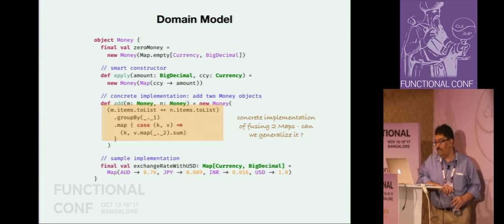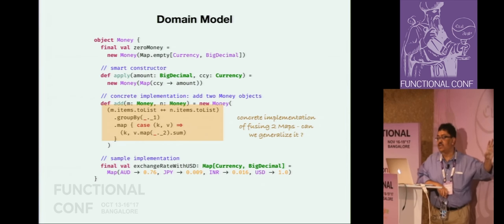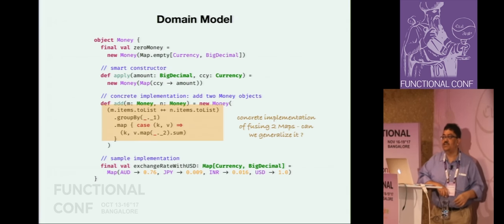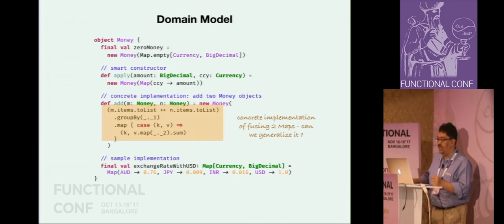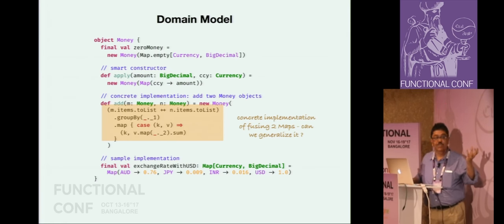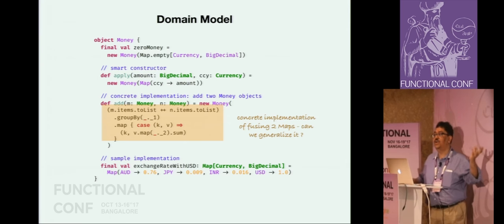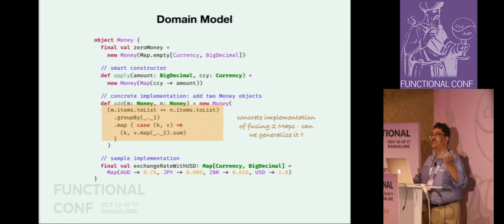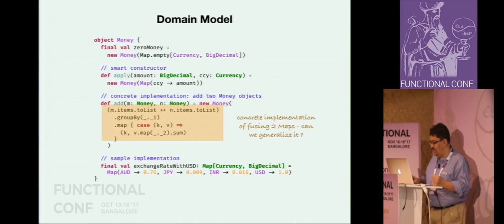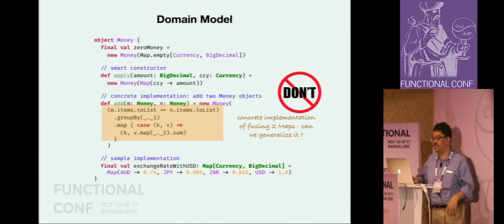We will look at this add function. What exactly are we doing here? If we focus on the how part - how we are adding the money instances - we are basically manipulating two maps. We are fusing two maps. We take one map, add the keys from the other, and in case the keys are equal, we combine them using addition. The important part is that it is a concrete implementation of fusing two maps. If we were able to abstract away the fusion part into some generic structures, we could get rid of some boilerplate code. This will lead to an explosion of boilerplate and code duplication if we do not address it.